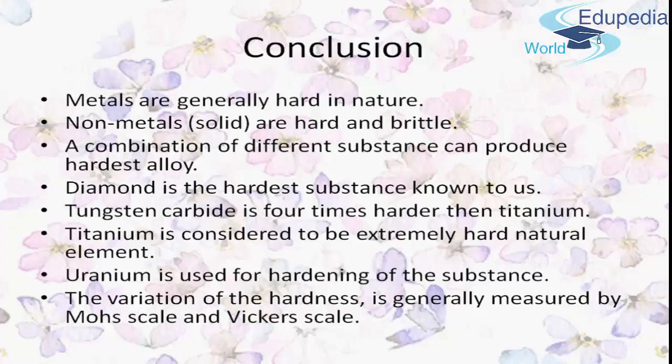Tungsten carbide does not deform and is the only metal that can be permanently polished, as it is four times harder than titanium. Titanium is considered an extremely hard natural element with tensile properties between 35,000 to 100,000 PSI. Iodide titanium has a Vickers value of 90 VHN, unalloyed titanium is about 160 VHN, and heat-treated titanium can reach 250 to 500 VHN. Uranium is also used for hardening substances.